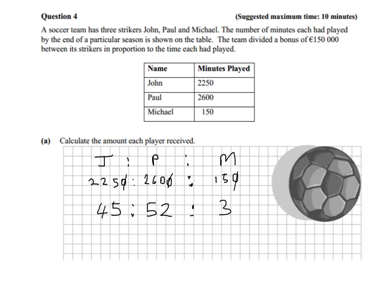If we divide by 5, we get 45 here, 52 here, and 3 here. Now that's a lot more usable because actually if you add all of those up quickly, you'll get 100. So we could just as easily say that John is entitled to 45% of £150,000 because it's 45 out of 100, which we know is 45%.